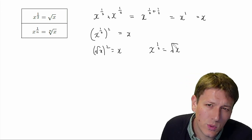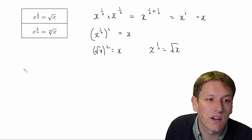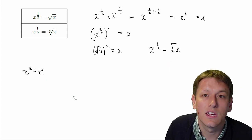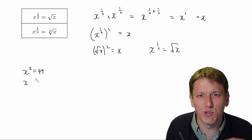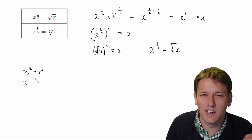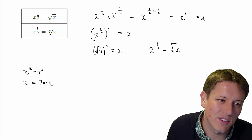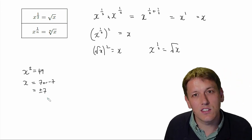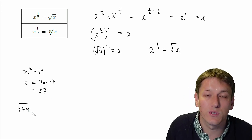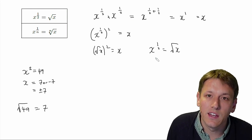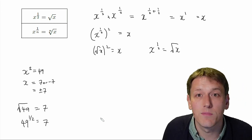Just a little word on notation: the square root symbol actually means the positive square root of X. Numbers can have two square roots — for example, solving X squared equals 49 gives X equals 7 or minus 7. But the square root of 49 means the positive square root, which is 7. And we're going to use X to the half in the same way: when I write 49 to the one half, that's going to mean 7 and not minus 7.